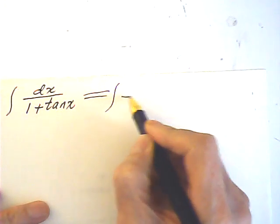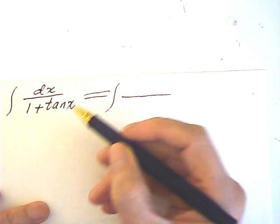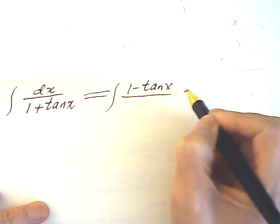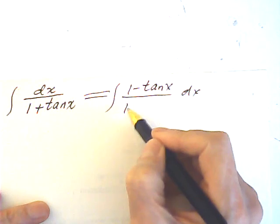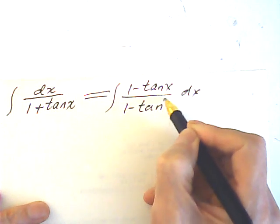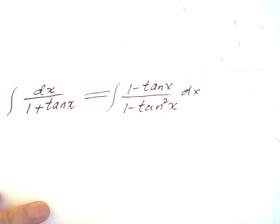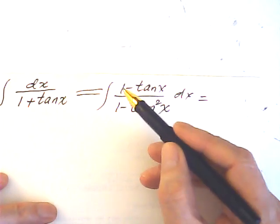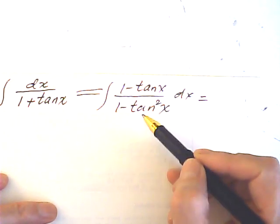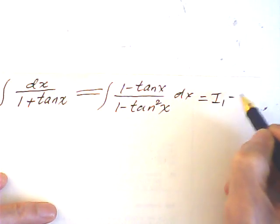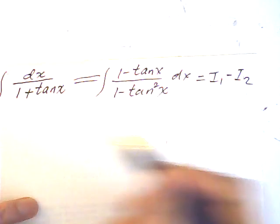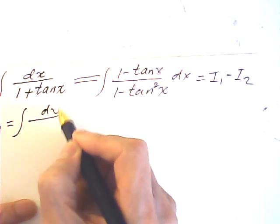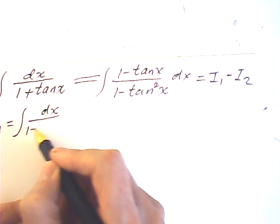The first method: I multiply the numerator and the denominator both by (1 minus tan x). So the denominator becomes (1 minus tan x) squared. Then I split this integral into two — one is 1 over that, and the other one is tangent over that. So there's I1 minus I2. I1 is dx over (1 minus tan x) squared.